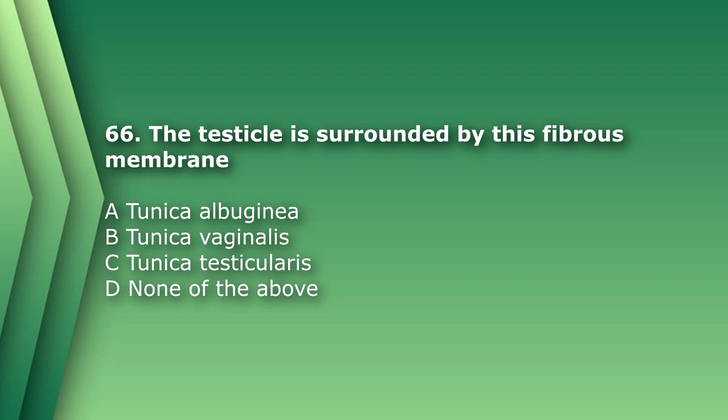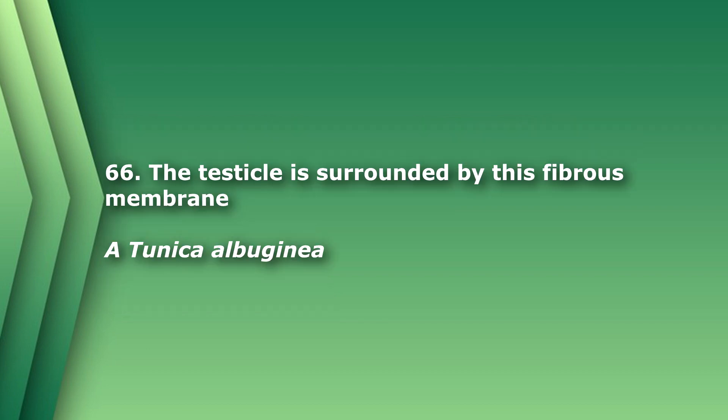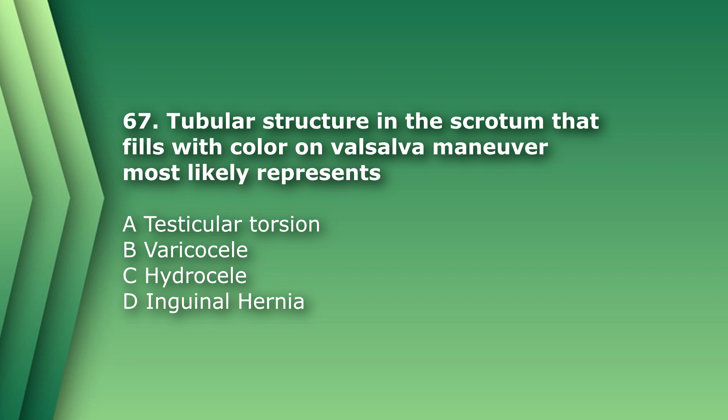Question 66: The testicle is surrounded by this fibrous membrane — A) tunica albuginea, B) tunica vaginalis, C) tunica testicularis, D) none of the above. The answer is A, tunica albuginea. Question 67: A tubular structure in the scrotum that fills with color on Valsalva maneuver most likely represents: A) testicular torsion, B) varicocele, C) hydrocele, D) inguinal hernia. Testicular torsion is a twisted testicle with lack of blood flow; a hydrocele is a fluid collection around the testicle; an inguinal hernia can be seen in the inguinal canal going into the scrotum but will not fill with color on Valsalva — so the answer is B, varicocele.